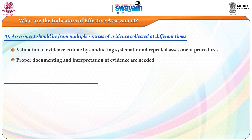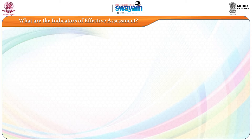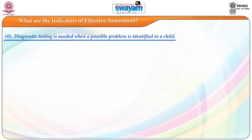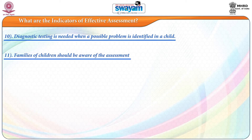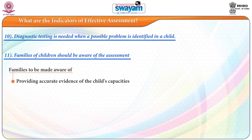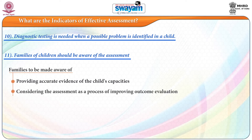The ninth indicator is that screening should be followed by a diagnosis, as dealt with in the previous video. The tenth indicator is that diagnostic testing is needed when a possible problem is identified in a child. The eleventh indicator is that the families of children should be aware of the assessment — families should be made aware of providing accurate evidence of the child's capacities and of considering assessment as a process of improving outcome evaluation.